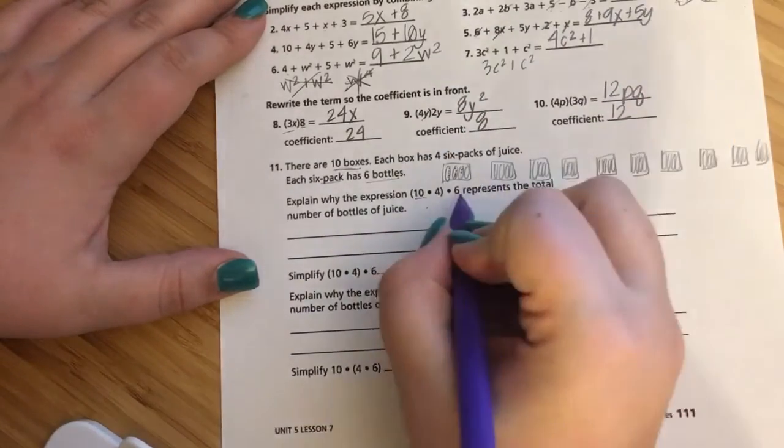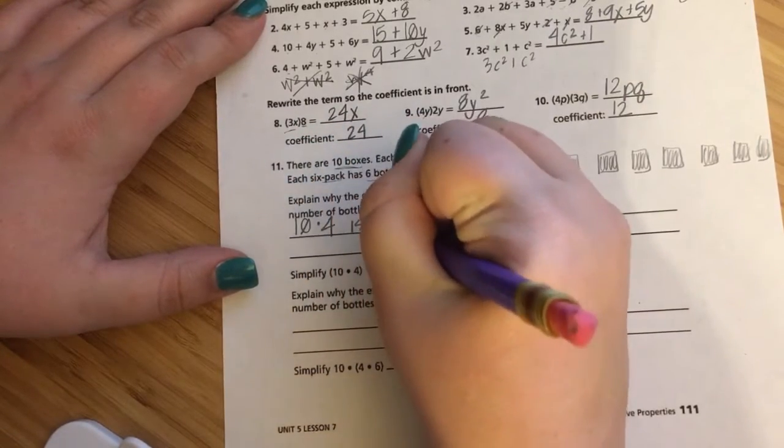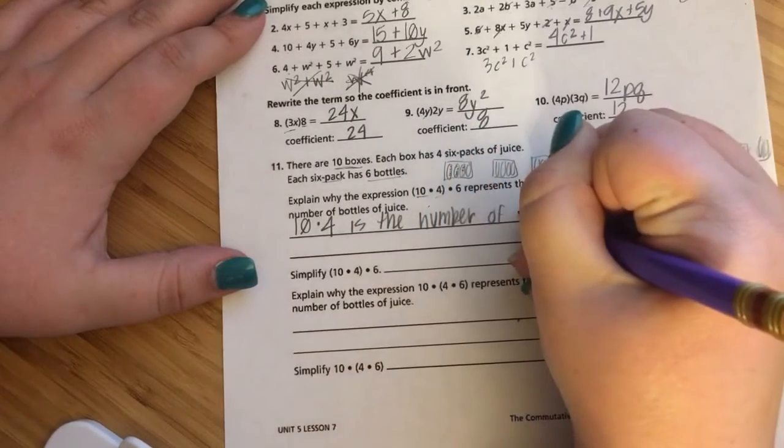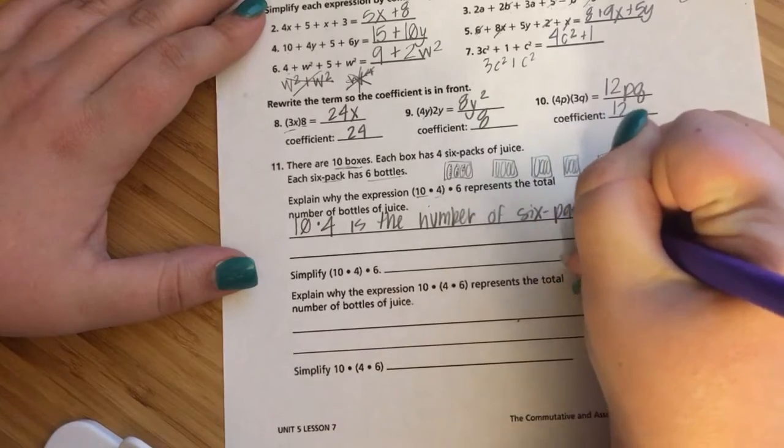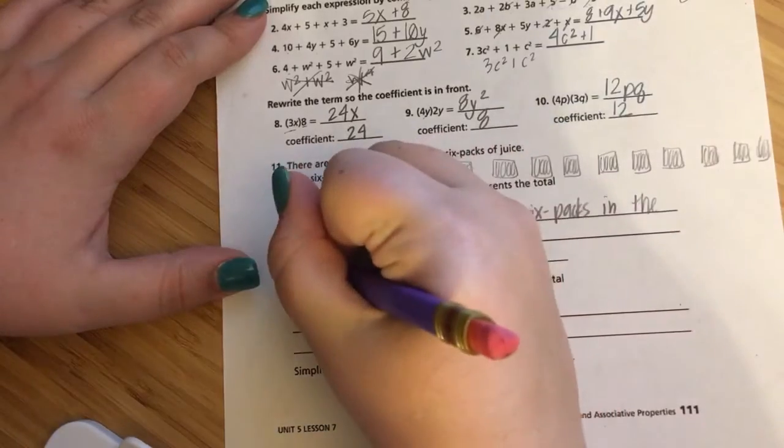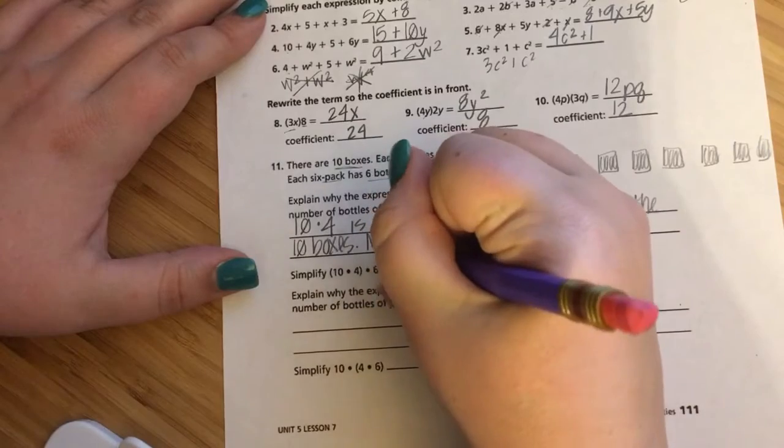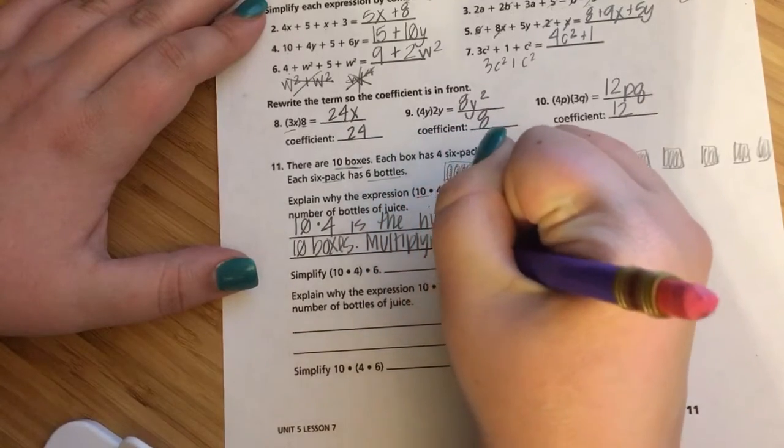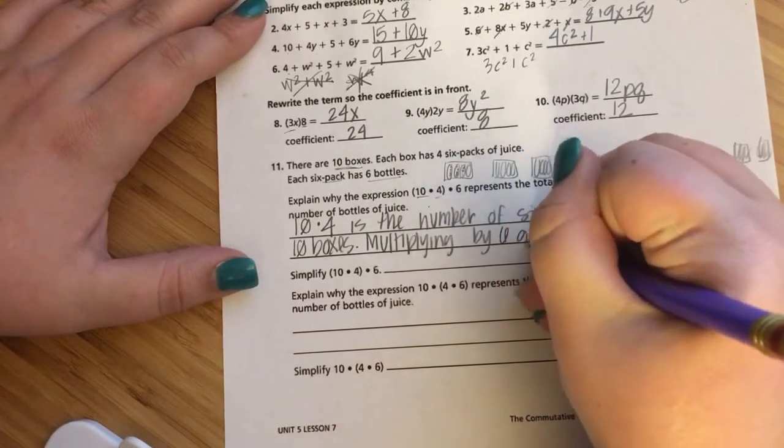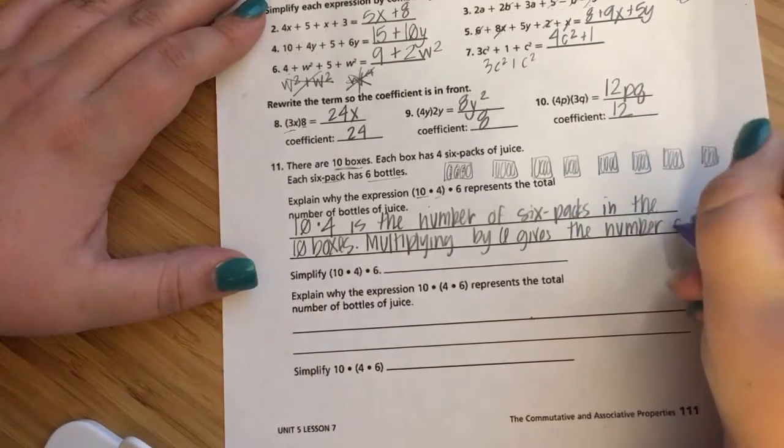So just modeling it with a picture, I'm able to see, oh, okay, well, this is how many bottles would be in one box. So if we look at 10 times 4, the product of 10 and 4, multiplied by 6, well, the 10 is the number of boxes, and the 4 is the number of 6-packs in the boxes. So I took the number of boxes and I multiplied it by the number of 6-packs in the boxes. When I have the 6 on the outside, I'm taking that total number, 40, and I'm multiplying it by 6. The 6 is the number of bottles within each 6-pack. I know. It's kind of like a different language.